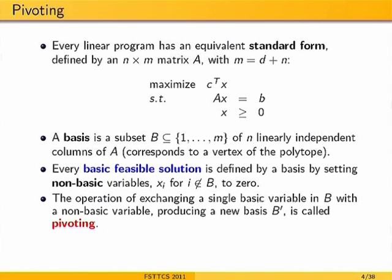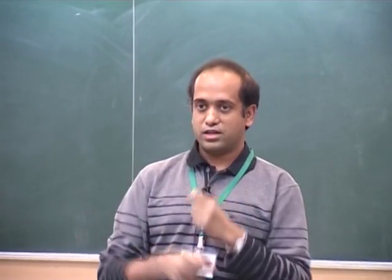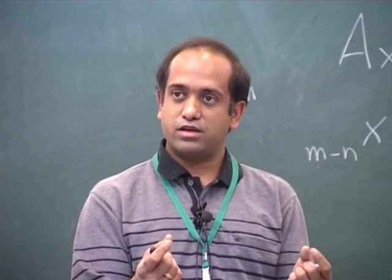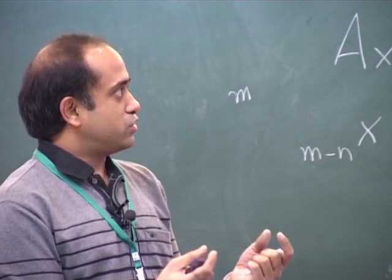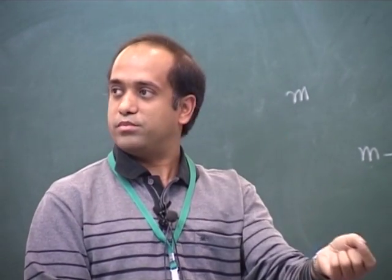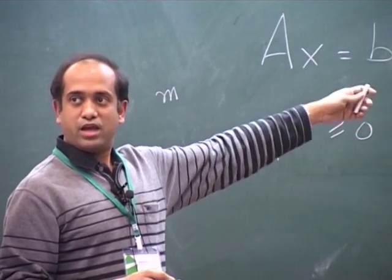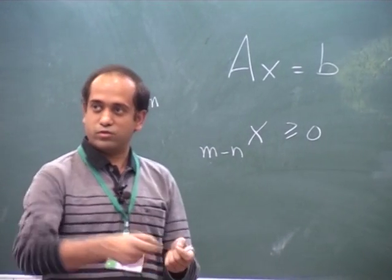The simplex algorithm starts at a vertex and moves to a nearby vertex — this is called pivoting. Among the neighborhood, you figure out which vertex is better than the current one and move there. In terms of algebra, you take one basic variable out and bring one new basic variable in: you take out one equality constraint, make it an inequality, and bring a new inequality constraint and set it to zero. That's like moving along an edge of the polytope.